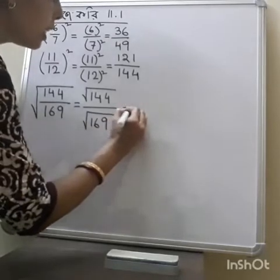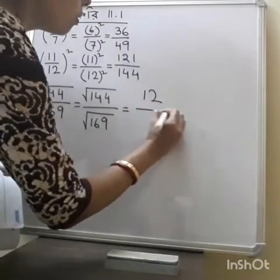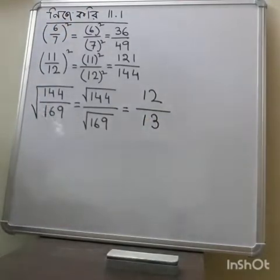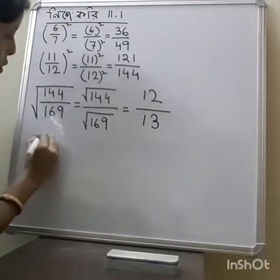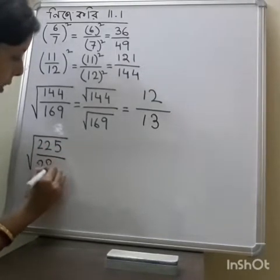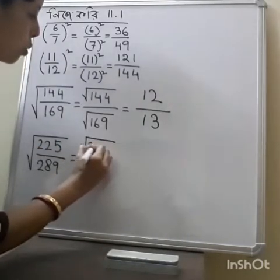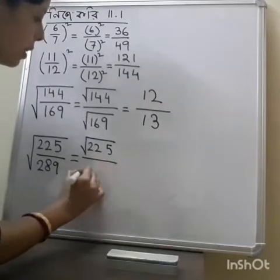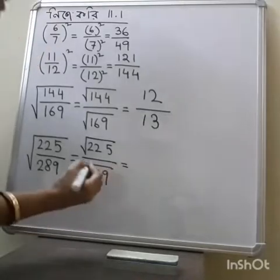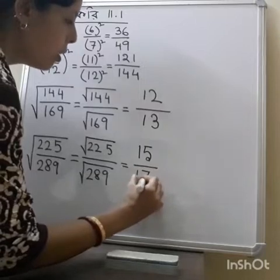We know that root over 144 is 12 and root over 169 is 13. Another example: root over 225 divided by 289 is equal to root over 225 divided by root over 289. Root over 225 is 15 and root over 289 is 17.